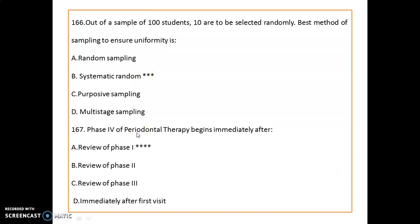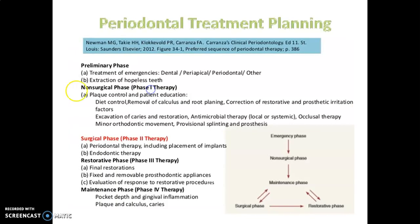Regarding periodontal therapy phases: Phase 4 begins immediately after the review of Phase 1. In the preliminary phase, we have treatment of emergencies and extraction. Phase 1 is the non-surgical phase, including plaque control, patient education, diet control, excavation of caries, restoration, antimicrobial therapy, occlusal therapy, correction of restorative and prosthetic irritation factors, minor orthodontic movement, and provisional splinting and prosthesis.